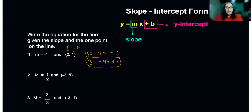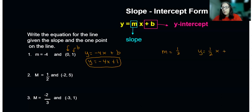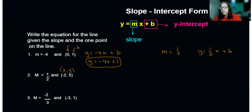Let's take a look at the next one. We have m equals one-half, and the coordinate is negative two, five. So let's start to write our equation: y equals one-half x plus b. We're given a point — we're given an x and a y — so let's take that x and y and put it in for x and y in our equation.